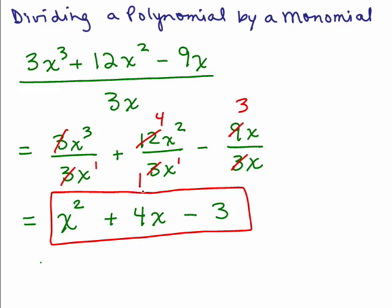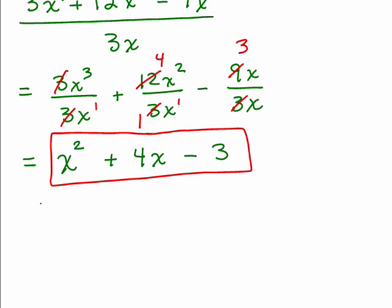Now sometimes when you do this, there might be another term that didn't cancel completely, so the last term might not have just been a minus 3 — you might have had another fraction. So let's do one like that now.